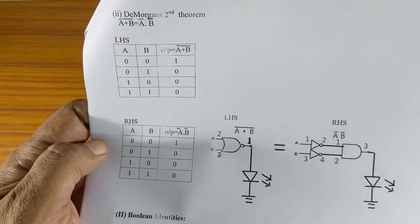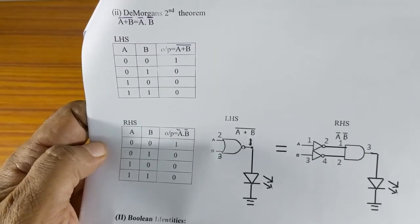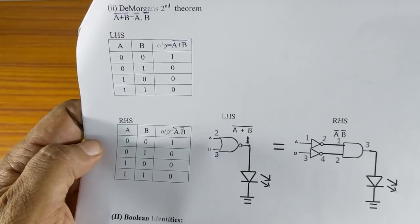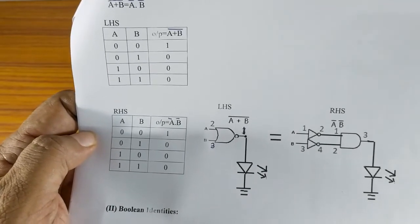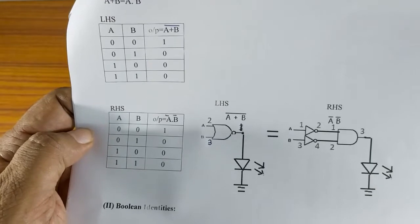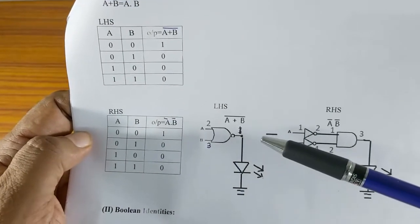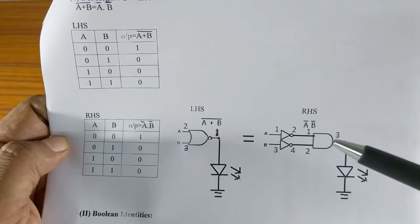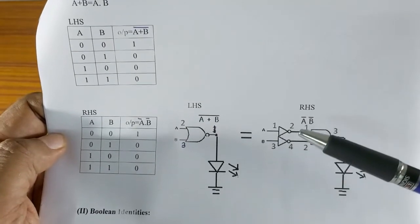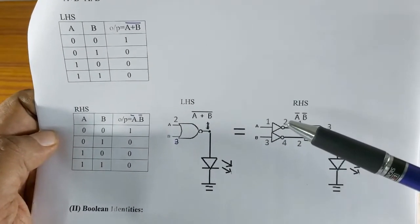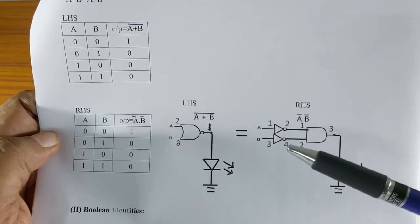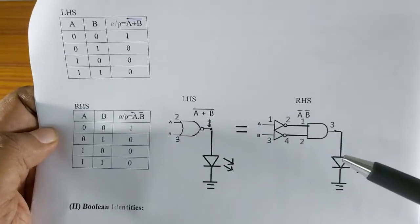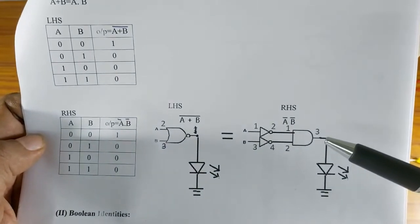Now we are going to prove the second De Morgan's theorem: A OR B, the whole bar, equals A bar dot B bar. The truth table for the left hand side and right hand side are shown, along with the circuit diagram. For the left hand side, pins 2 and 3 are the inputs and pin 1 is the output. For the right hand side, we have a NOT gate followed by an AND gate. Pins 1 and 3 are the inputs for A and B, and pins 2 and 4 are the outputs. Pin 2 of the NOT gate goes to pin 1 of the AND gate, and pin 4 of the NOT gate goes to pin 2 of the AND gate. Pin 3 is given to the LED.